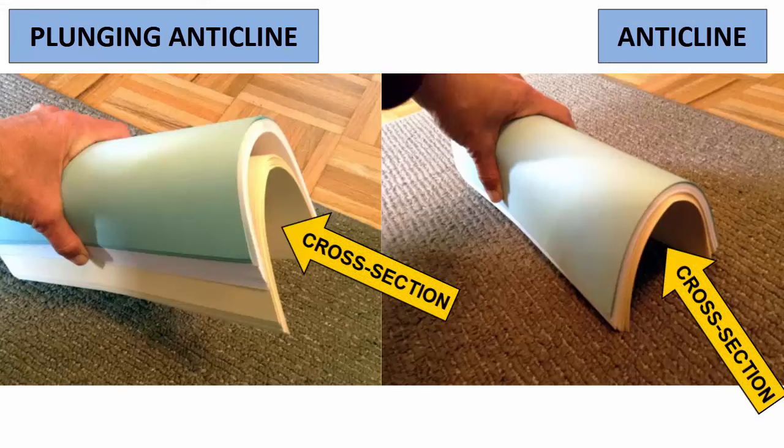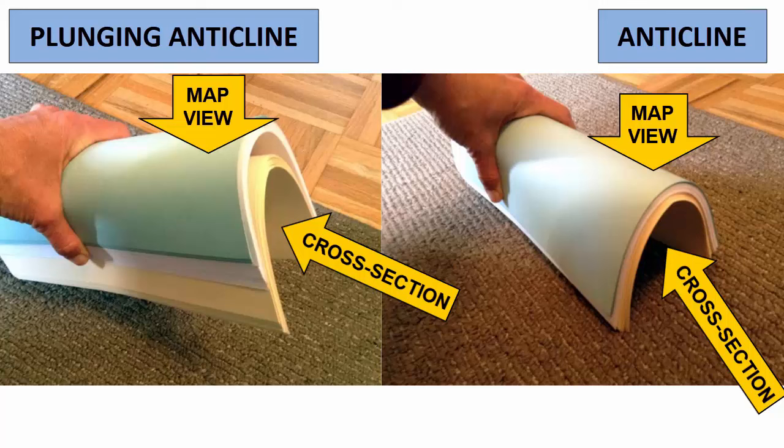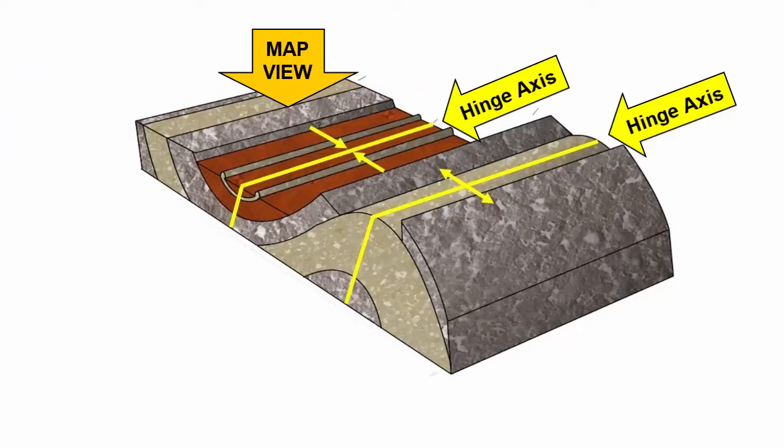Plunging and non-plunging synclines and anticlines have similar cross-sectional shapes. However, their map views look quite different. Imagine folding all these pieces of paper into a syncline or anticline and then eroding the surface flat. From the map view, when we look down at the patterns of rock beds outcropping on the surface, we see parallel lines where the beds are coming out. These lines are symmetrical mirror images across the hinge axis.